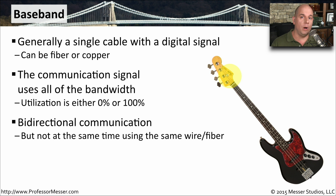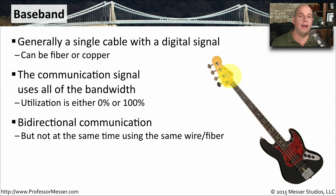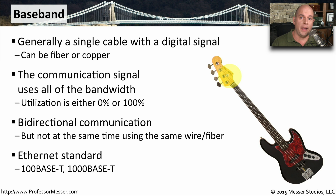Just because you have a single wire and you're using all of the bandwidth doesn't mean this is a one-way path. You can have bi-directional communication over a baseband network, just not at the same time. Devices have to wait for everyone to finish talking before they are able to communicate over this medium. This is a very standardized way of communicating — if you're using Ethernet, whether it's 100 megabit, a gigabit, or different formats of Ethernet, you are using baseband communications to send that data.